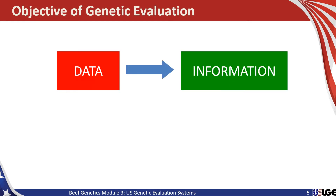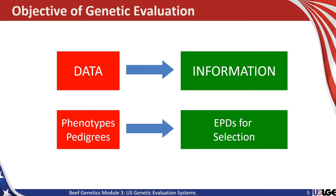The objective of genetic evaluation can be summarized very simply as turning data into information. In the U.S. beef system, that means taking phenotypes — individual performance records and groups of animals — as well as their pedigrees and genomic information, and processing that through a series of steps to produce expected progeny differences and selection indexes. These EPDs and selection indexes are then ultimately used by seed stock and commercial producers in their selection systems.